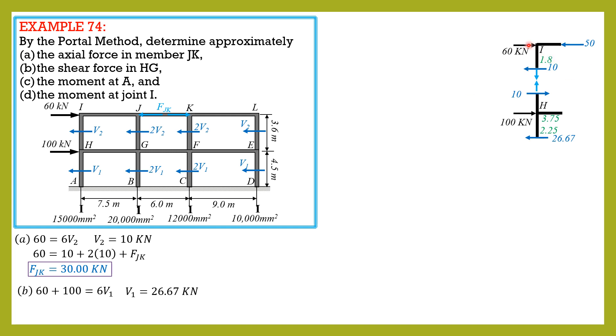So this is the FBD. For this part here, if you do the free body diagram, since V2 is 10 and that's 60, so that is 50. This part we apply action and reaction, and we have here F1H. 10 plus 100 is 110 minus 26.67, so that means this is 83.33 and this is the shear in HG that is required.